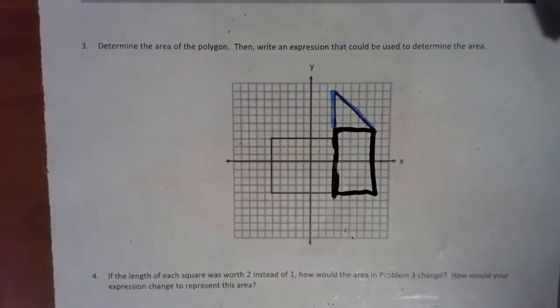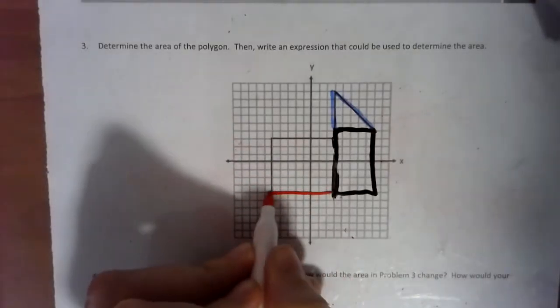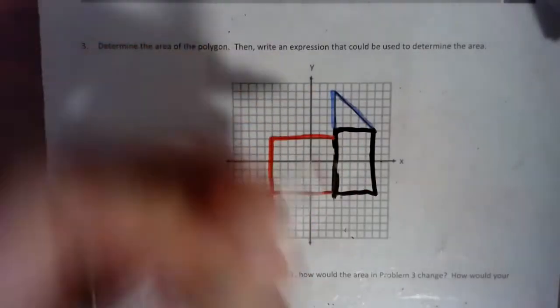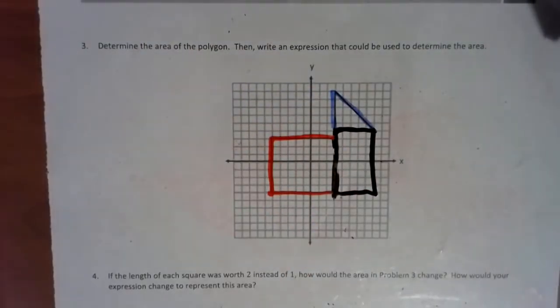And then we're going to do this triangle in blue, and then we're going to do this big rectangle in red. So we have three different shapes that we're going to be adding together here to find the area of the irregular shape.